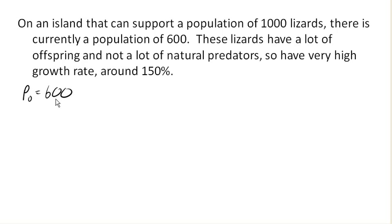our starting population is 600. And our logistic model, because we have a carrying capacity, a maximum sustainable population, we know we're using logistic model. Our growth rate, our natural growth rate is around 150%, so that would be 1.5 written as a decimal. 1 minus PN minus 1 over our carrying capacity of 1,000 times PN minus 1.